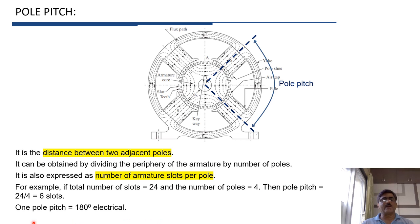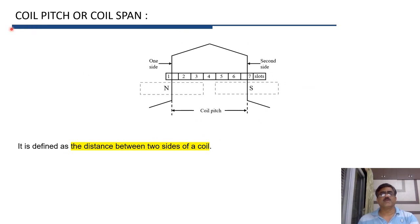One pole pitch is always equal to 180 degrees electrical. The next important term is coil pitch or coil span — the distance between two sides of a coil. Coil side 1 is placed in slot 1 and coil side 2 is placed in slot 7, and the distance between these two coil sides is called the coil pitch.